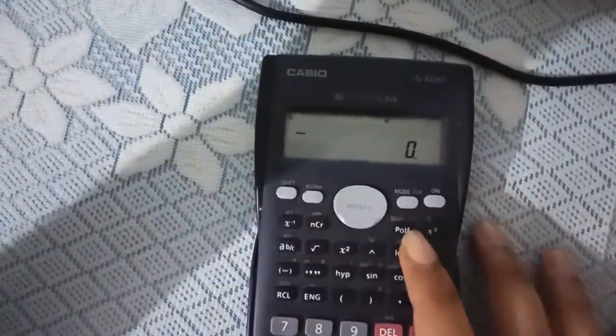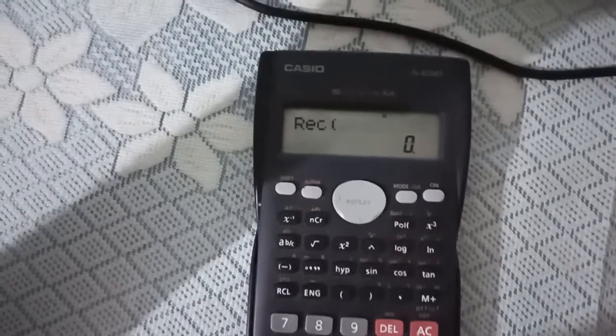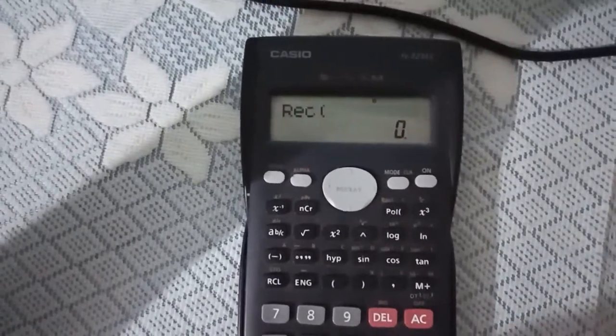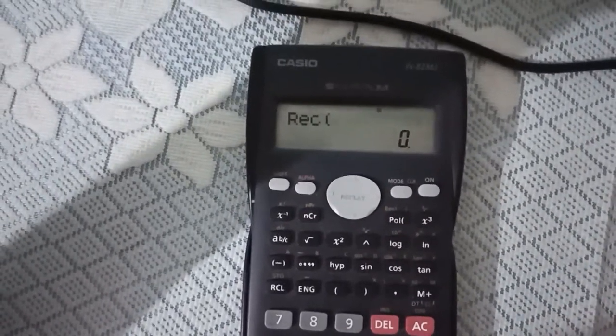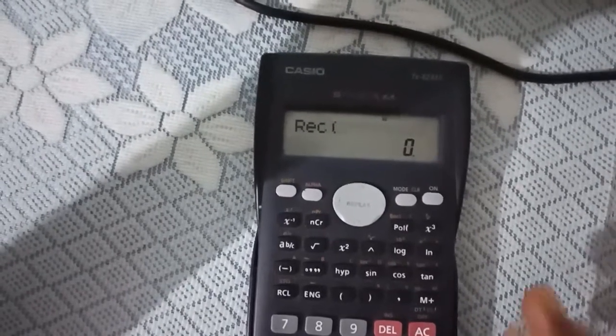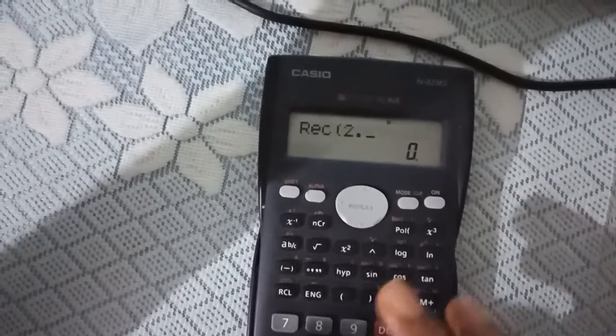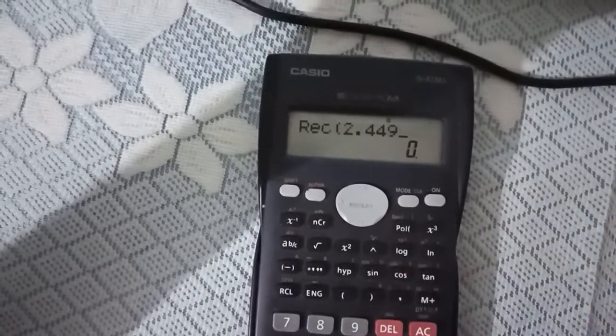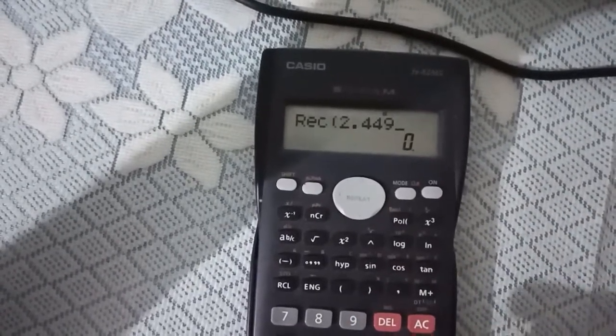For doing that, you need to press shift then press this button. So, rectangle will appear on your screen. And you now put the values of R and theta. Our R was suppose 2.449 and our theta was 45 degrees.